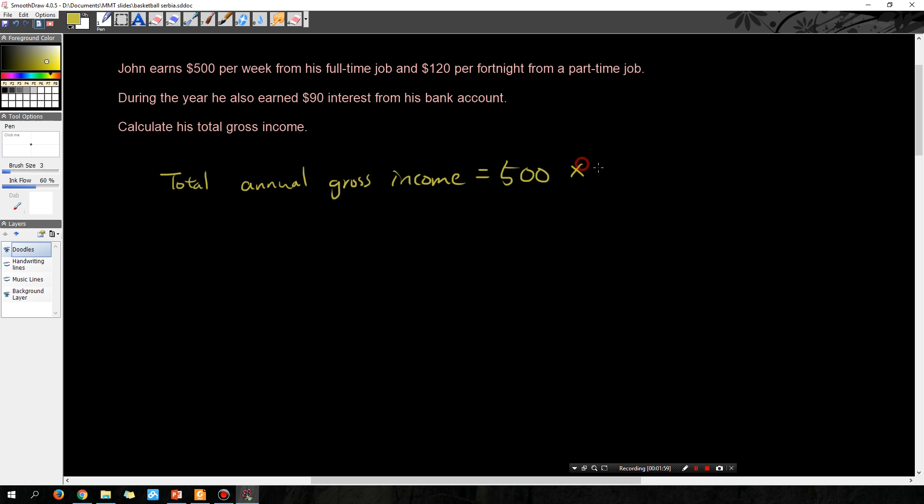Some might argue that it's 52 point something, but usually at school we're pretty happy with just 52 weeks in a year. Plus $120 per fortnight, so there are 26 fortnights in a year. Fortnight just means two weeks.